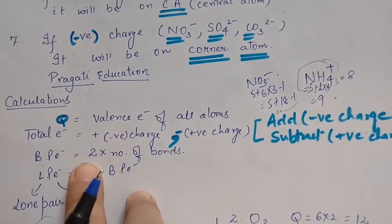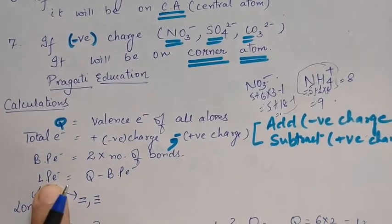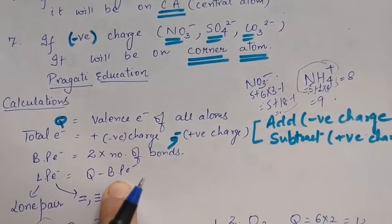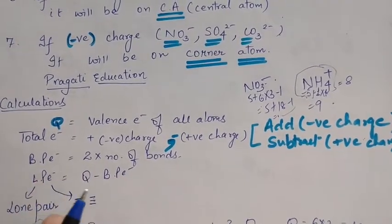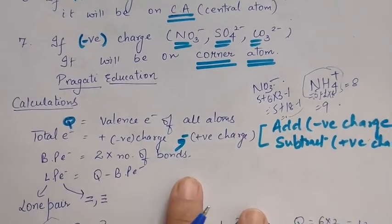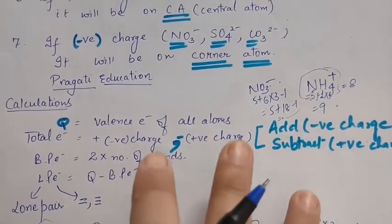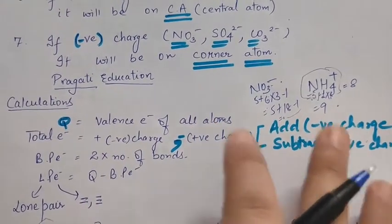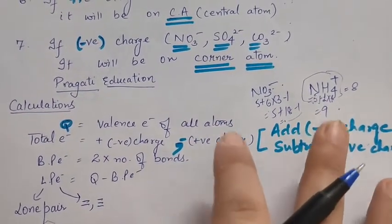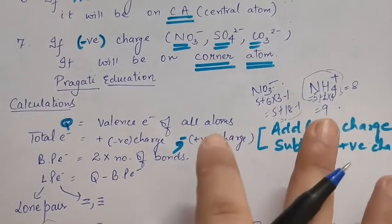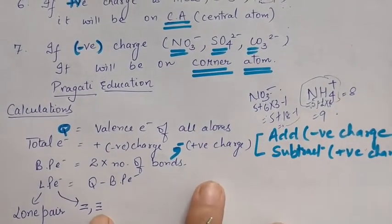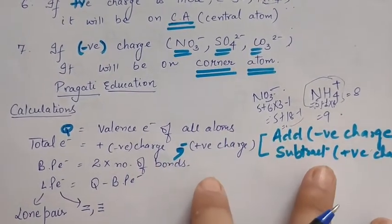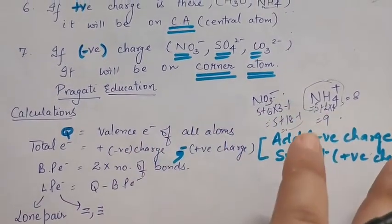Next, find the bond pair electrons: count how many bonds are present and multiply by two. Then find lone pairs: total valence electrons minus bond pair electrons gives you the lone pairs. Distribute the lone pairs to the corner atoms first, then give the remaining to the central atom. If there are still lone pairs left to distribute, you create a double or triple bond — which I will explain during practice.